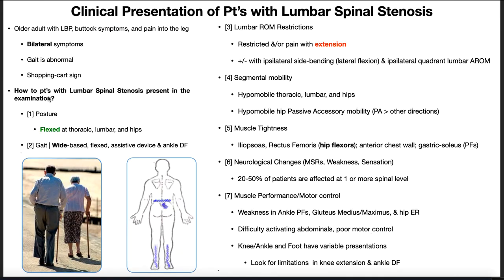The posture is flexed at the lumbar spine and the hips. Lumbar flexion corresponds with decreased lordosis — decreased lumbar lordosis. They may also be flexed at the thoracic spine, showing some hyperkyphosis at the thoracic spine.